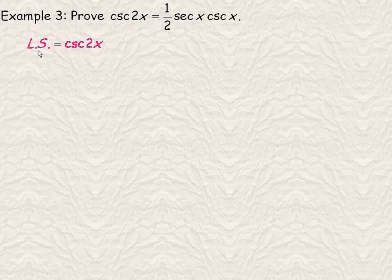So we'll start with the cosecant 2x, the left side. Write your left side LS equals. That's the left side of the identity.